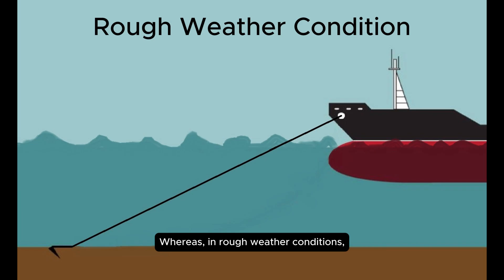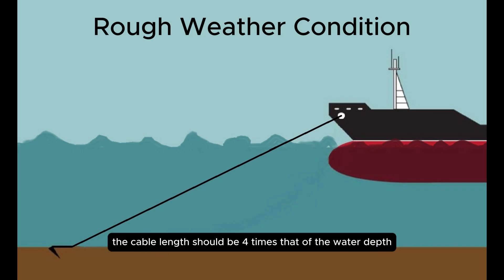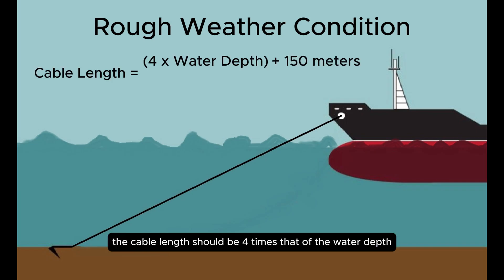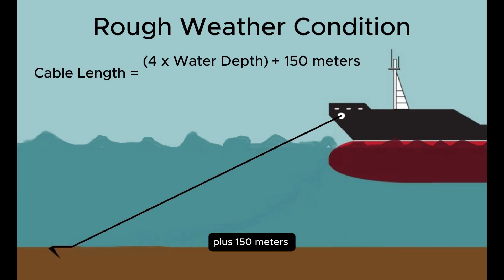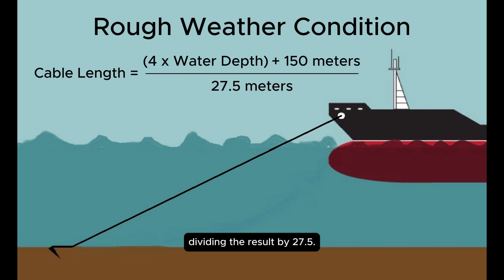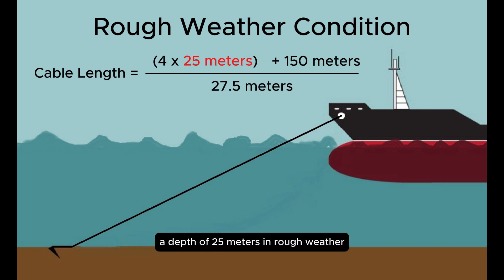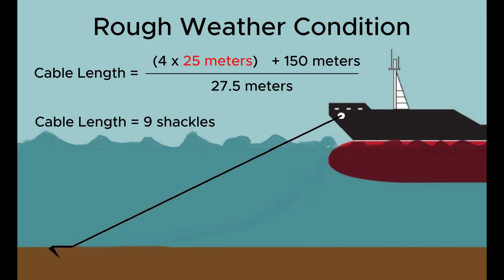In rough weather conditions, the cable length should be four times that of the water depth plus 150 meters, dividing the result by 27.5. For example, a depth of 25 meters in rough weather should have nine shackles of cable length.